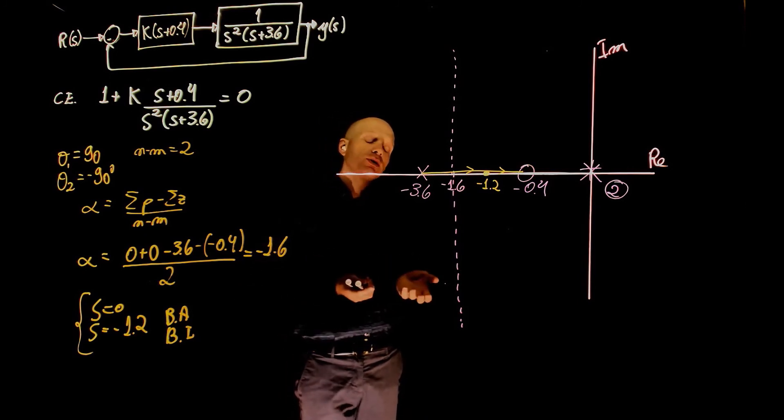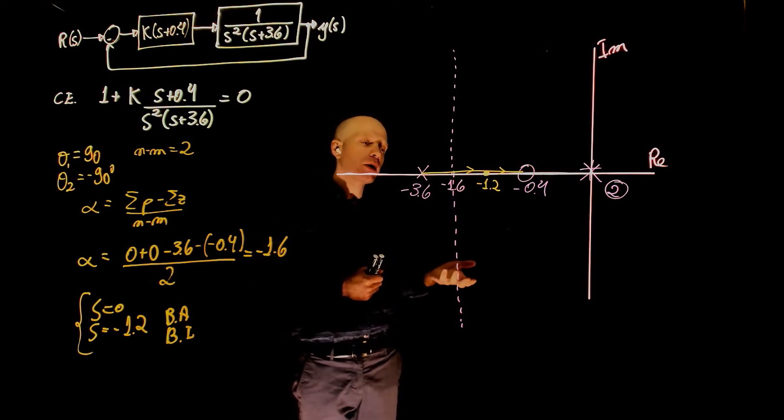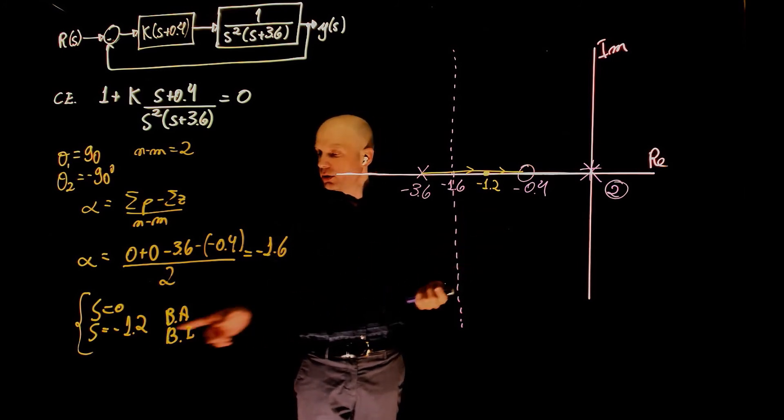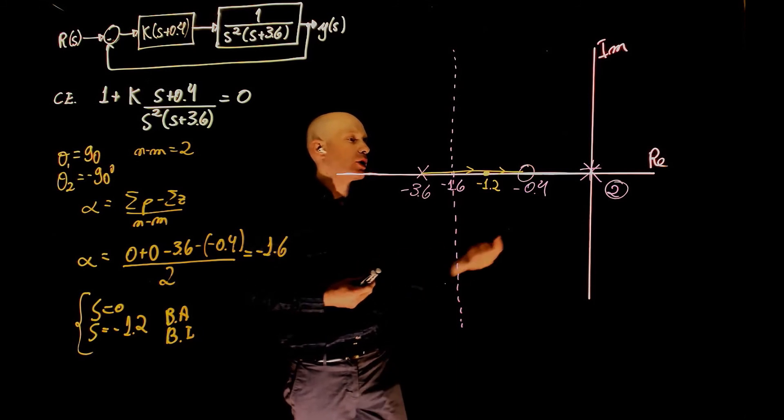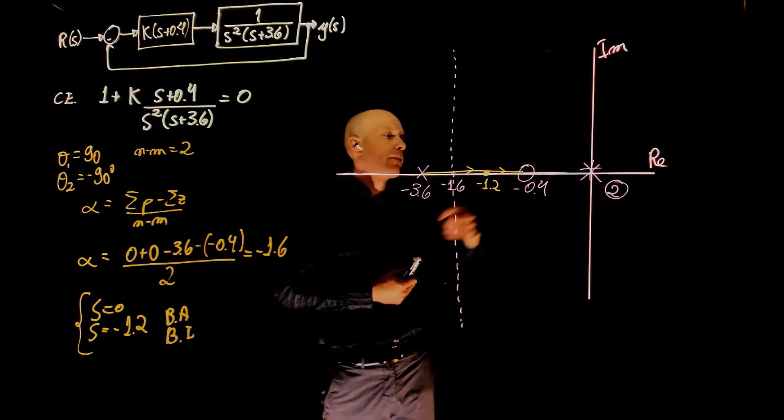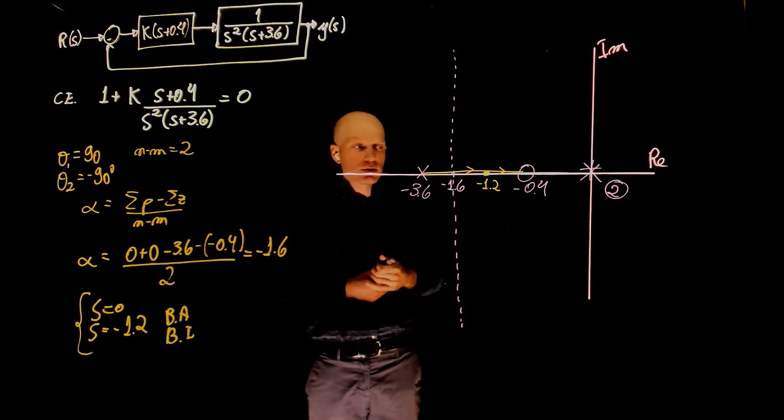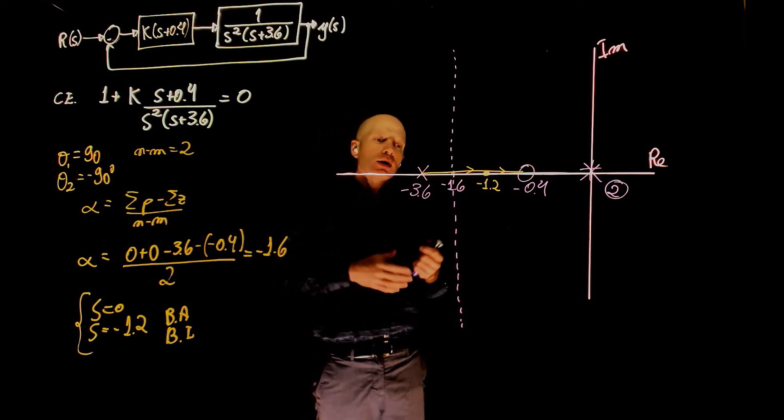Now, they have to use the asymptotes, and the additional requirement now is that they also pass through the breakaway or break-in point. Clearly, zero here is the breakaway point, because the poles are leaving the real axis. And negative 1.2 needs to be some sort of break-in point.